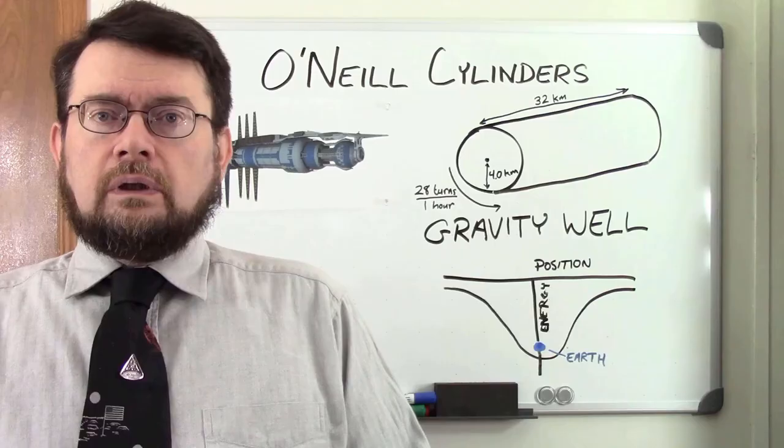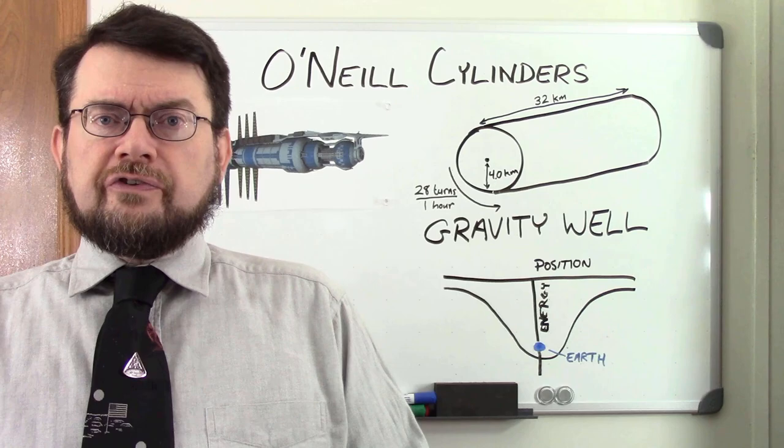The International Space Station is only about as big as an American football field, but it took 30 launches to assemble. Building an O'Neill cylinder would require thousands of Earth launches, even using today's biggest rockets. This would be a huge undertaking.